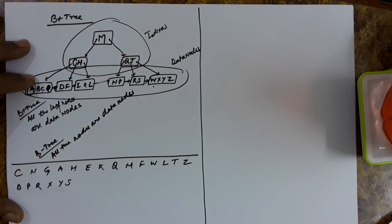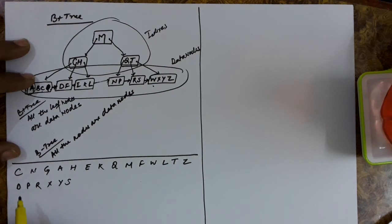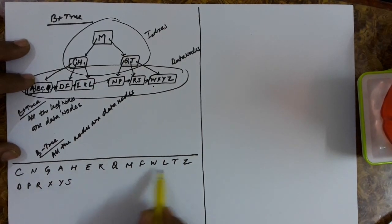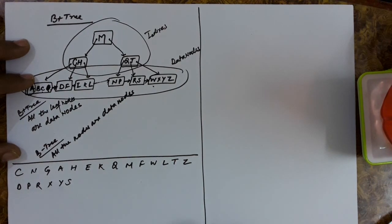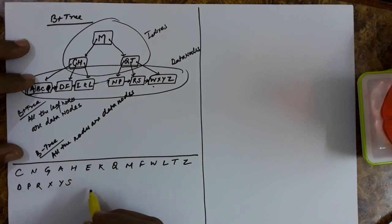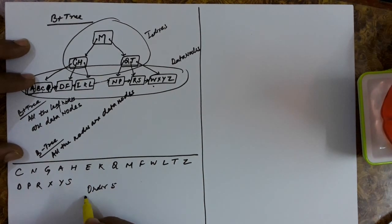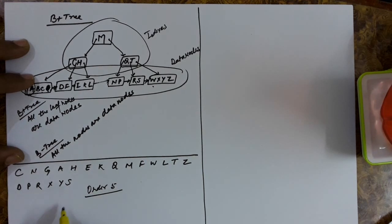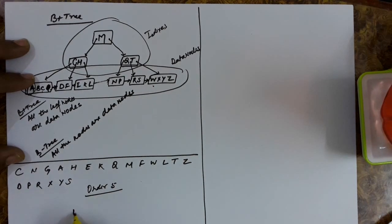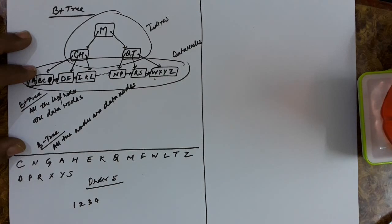In this lecture we will learn how to insert keys in the B+ tree, or how to design the B+ tree given the keys. Suppose these are the keys given: C, N, G, A, H, and so on. You have to insert all these keys in the B+ tree. For this, the order is 5. In the B-tree, up to the insertion of four keys it is fine, but if we insert the fifth key we will perform the splitting.